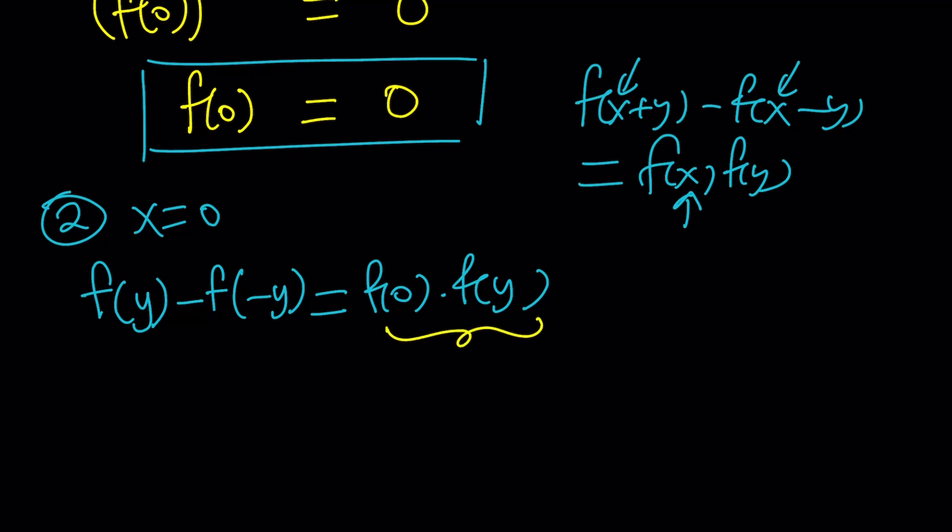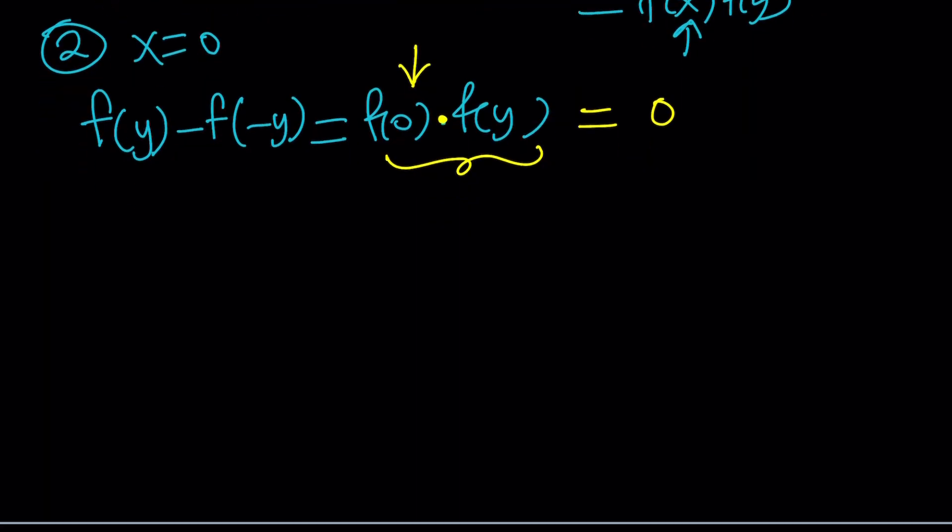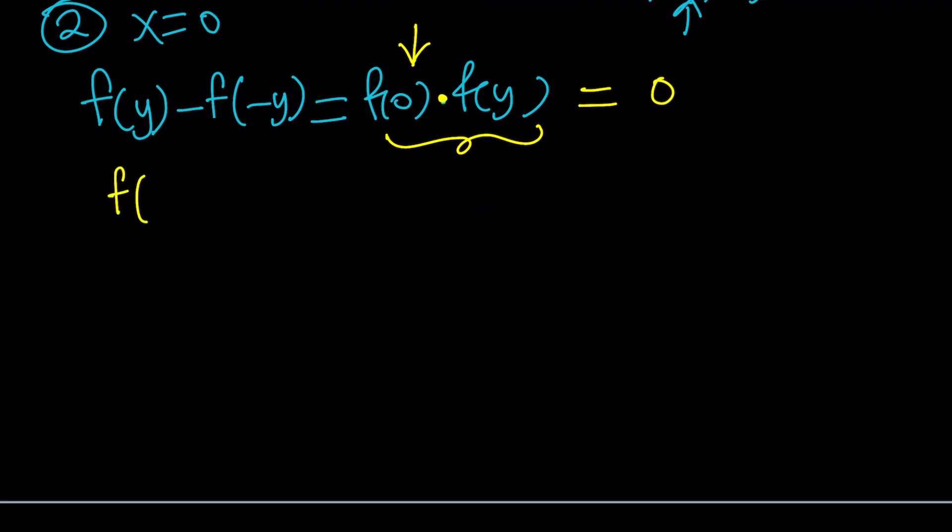f of y is unknown. But we know from the previous step, that's why it's important to do these things step by step, follow every step carefully. We know that f of 0 is equal to 0. So 0 times any value is 0. This is a huge improvement because this gives us a more general statement than the first one. Notice what that gives us. f of y minus f of negative y equals 0.